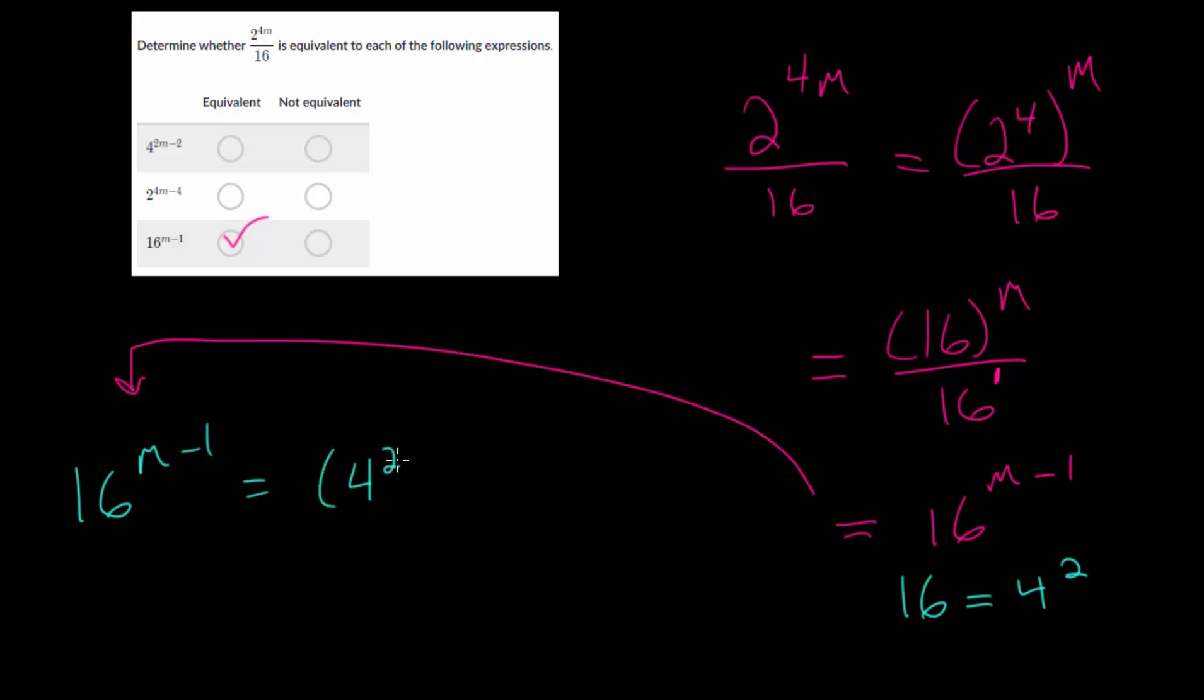So let's substitute 4 squared in there. And that's raised to the m minus 1. And we have an exponent to an exponent. So we can multiply these. So that's 4 to the 2 times m minus 1, which will distribute. And we get 4 to the 2m minus 2. And that looks to be the first one.